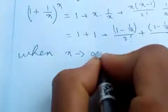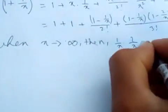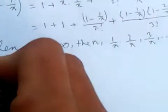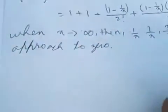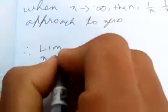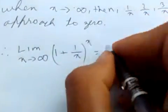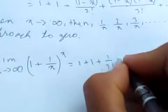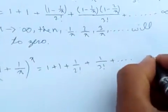When x tends to infinity, then 1/x, 2/x, 3/x, and so on will approach zero. Therefore, taking the limit as x tends to infinity of (1 + 1/x) to the power x: since 1/x approaches zero, the terms simplify to 1 plus 1 plus 1 over 2 factorial plus 1 over 3 factorial, and so on.